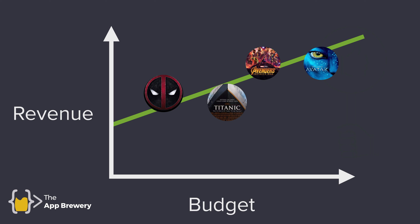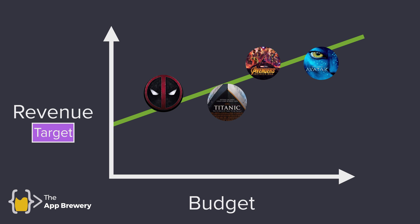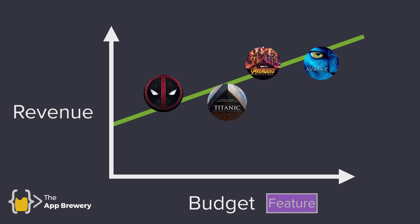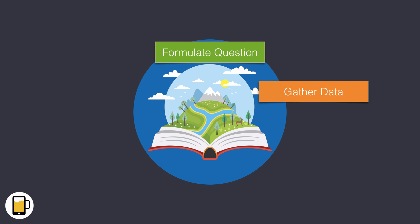As data scientists we can identify exactly what it is we're trying to predict — namely movie revenue. A data scientist would call this the dependent variable, and in machine learning this would be called the target. We can also identify what we're using to make the prediction — namely movie budgets. A data scientist would call the budgets the independent variable, and in machine learning this would be called a feature. Now that we've formulated our question, we can move on to step two and go out there and gather some data. We'll do just that in the next lesson.